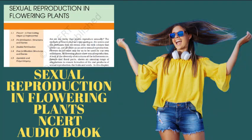Section 2.2: Pre-fertilization Structures and Events. Much before the actual flower is seen on a plant, the decision that the plant is going to flower has taken place. Several hormonal and structural changes are initiated which lead to the differentiation and further development of the floral primordium. Inflorescences are formed which bear the floral buds and then the flowers. In the flower, the male and female reproductive structures, the androecium and the gynoecium, differentiate and develop. The androecium consists of a whorl of stamens representing the male reproductive organ and the gynoecium represents the female reproductive organ.